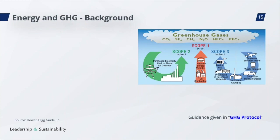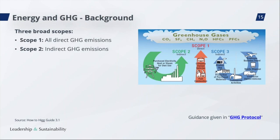Scope 2 covers all indirect greenhouse gas emissions from consumption of purchased electricity, heat, or steam. Scope 3 covers all other indirect emissions, such as the extraction and production of purchased materials and fuels, transport-related activities in vehicles not owned, etc. The HIG FEM tool provides greenhouse gas calculation for both Scope 1 and Scope 2.